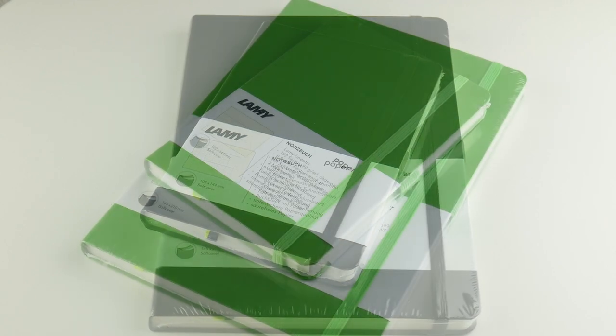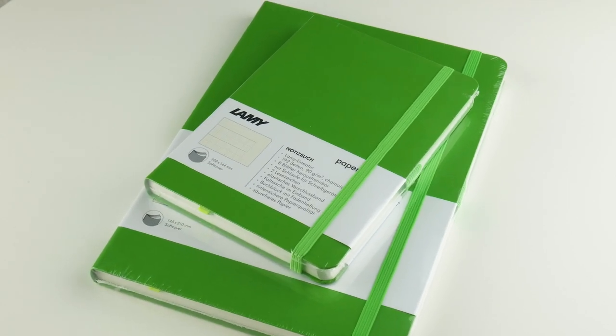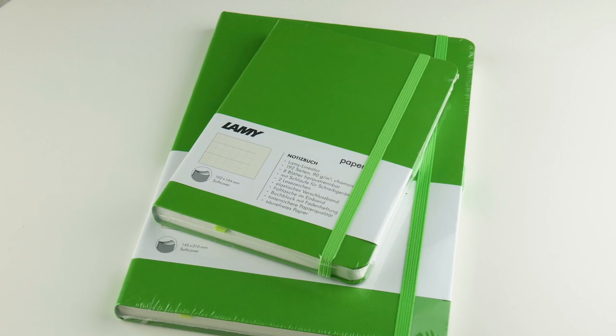So we've got A5 and A6 sizes, same ruling on everything. These are the soft cover which still has some firmness to it. The other thing we haven't mentioned is they have a built-in pen loop. Unlike Leuchtturm where if you want the pen loop you got to buy the pen loop, this has already got it in there. It's got a back pocket in it too. They're in line with everything else in pricing.